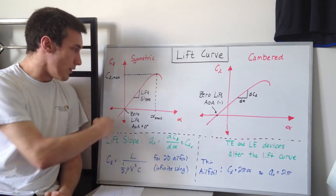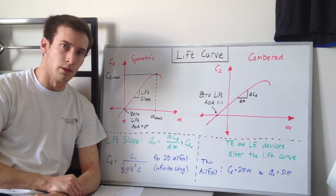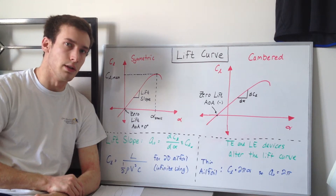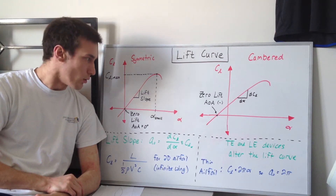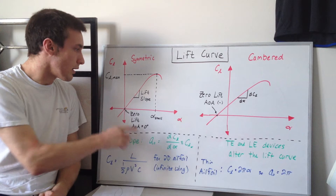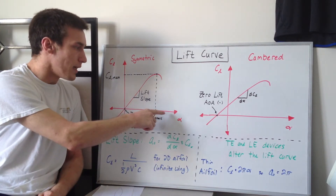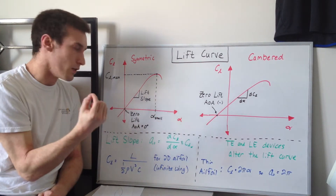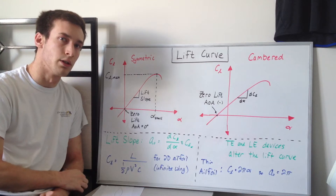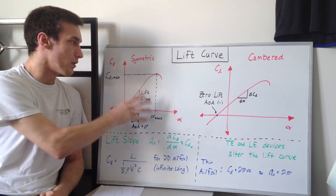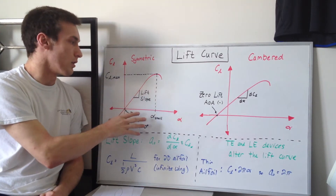The x-axis is the angle of attack, which I've described in another video and I'll post that in the description below. So what does the lift curve actually tell you? It's saying that for a given angle of attack, I can tell you what the lift coefficient is. These are for particular airfoil sections.